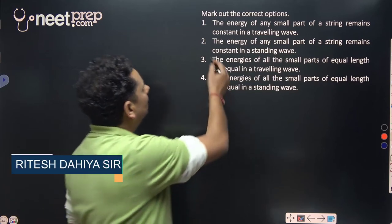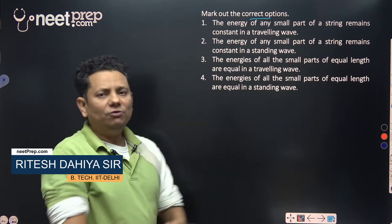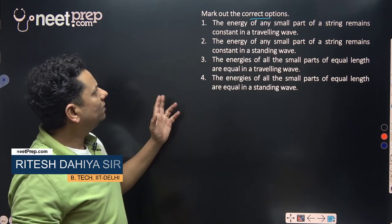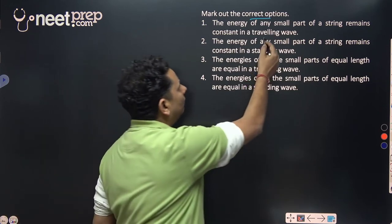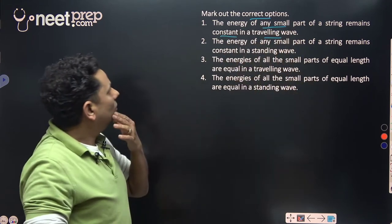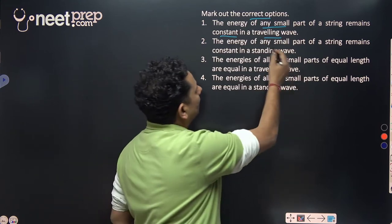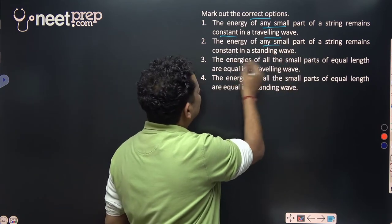The next question says mark out the correct option. First, the energy of any small part of a string remains constant in a traveling wave. Second, the energy of any small part of a string remains constant in a standing wave.